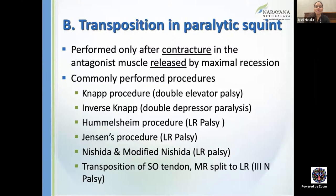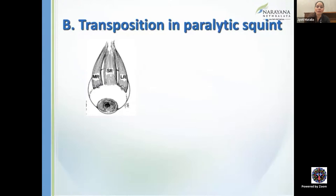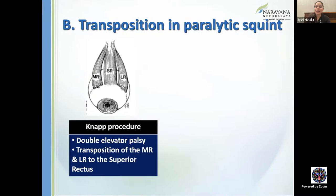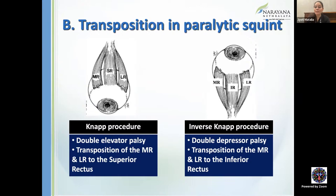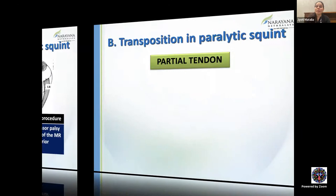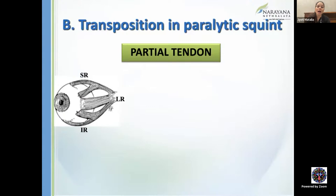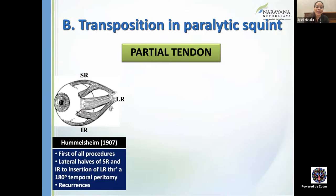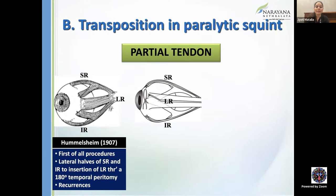In the NAPS procedure, the medial and lateral rectus are shifted along the spiral of Tillaux to the superior rectus. The inverse NAPS shifts them to the inferior rectus for double depressor palsy. Transpositions in paralytic squint can be partial tendon or full tendon. In partial tendon (Hummelsheim's), the lateral halves of the SR and IR are inserted to the LR through a 180-degree temporal peritomy, but recurrences are common. The Carlson-Jampolski procedure is done as an adjustable variant to control induced vertical deviation. Jensen's procedure is no longer preferred as it ties split muscle to a paralyzed LR.